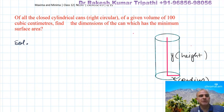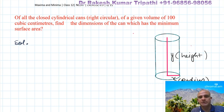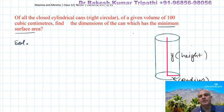The question is: of all closed cylindrical canes — a cylindrical cane is the same as a cylinder — whose volume is 100 cubic centimeters, we are supposed to find the dimensions of the cane which has the minimum surface area. So what we need to minimize is its surface area.